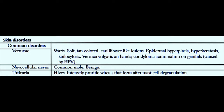Some of the more common disorders include verrucae, or warts. Warts are soft, tan-colored, cauliflower-looking lesions. The histology is normally epidermal hyperplasia, hyperkeratosis, and koilocytosis — koilocytosis meaning evacuated cells with large amounts of empty-looking cytoplasm. These can be seen on a Pap smear, and are caused by HPV, or human papillomavirus.